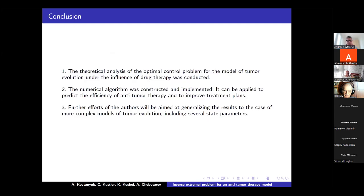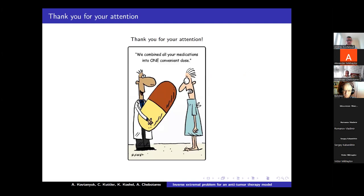In conclusion: the theoretical analysis of the optimal control problem for the model of tumor evolution under the influence of drug therapy was conducted. The numerical algorithm was constructed and implemented. It can be applied to predict the efficiency of anti-tumor therapy and to improve treatment plans. Further efforts of the authors will be aimed at generalizing the results to the case of more complex models of tumor evolution including several state parameters. Thank you for your attention.